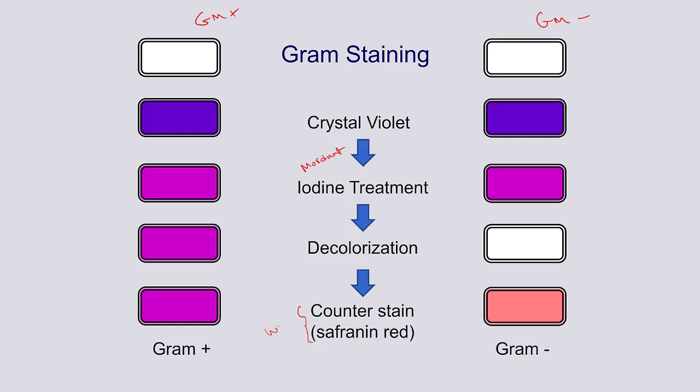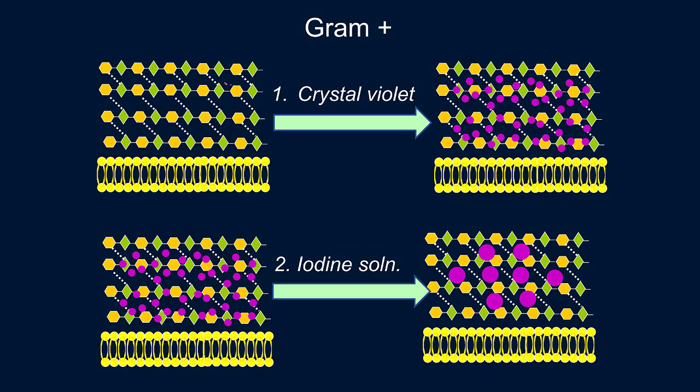The first step is crystal violet. You start with a clear field and the bacteria has no stain on it. Crystal violet allows the stain to penetrate through the cell wall, but at that step it can still wash away just as easily as it went in. So you need to solidify it, and that's why we add iodine solution, which crystallizes the stain that's already in the cell wall.